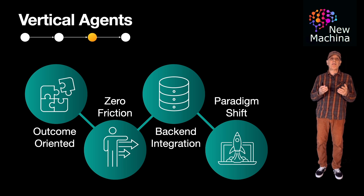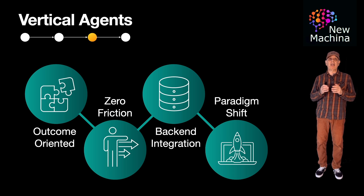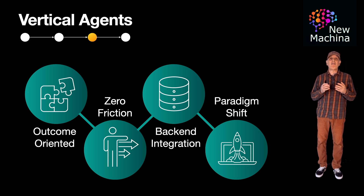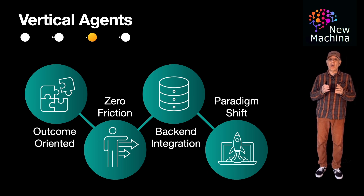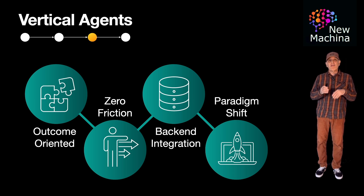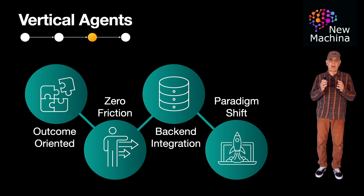So in summary, vertical agents are highly fine-tuned for specific industry verticals such as healthcare, legal, finance, or manufacturing. Vertical agents could displace SaaS incumbents that are slow to adopt this new AI agentic technology. What I can tell you for sure is this: in the next five to ten years, we will all see who ends up as the winners and losers of this technical transition.